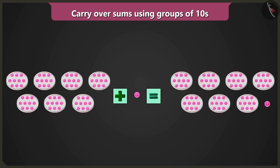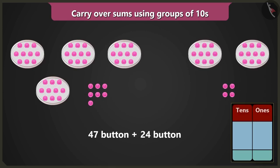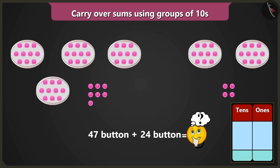Well done Bubbly! Can you place forty-seven and twenty-four buttons in the table of ones and tens and then add them up?